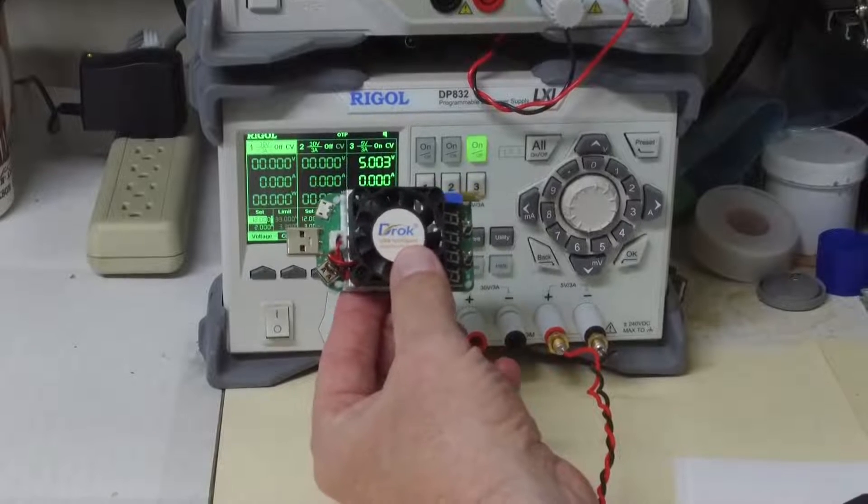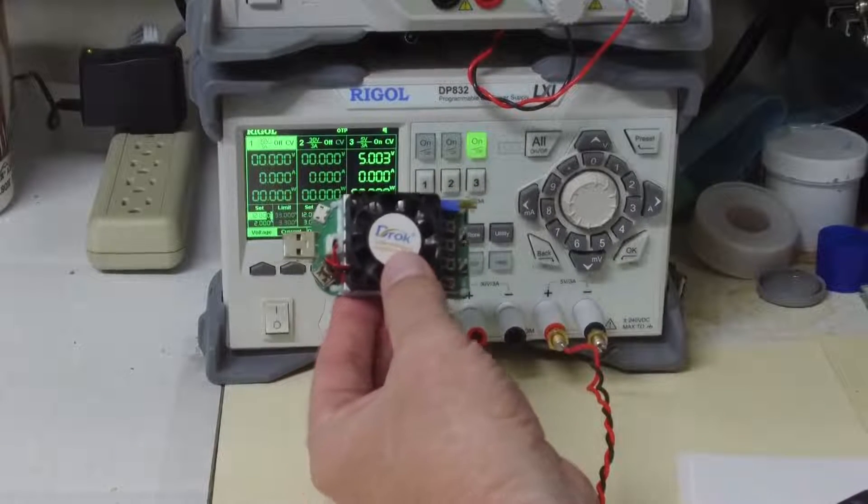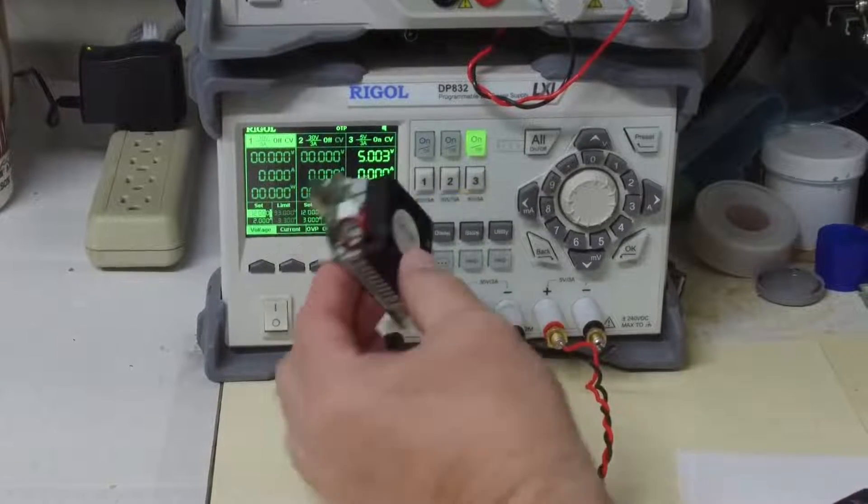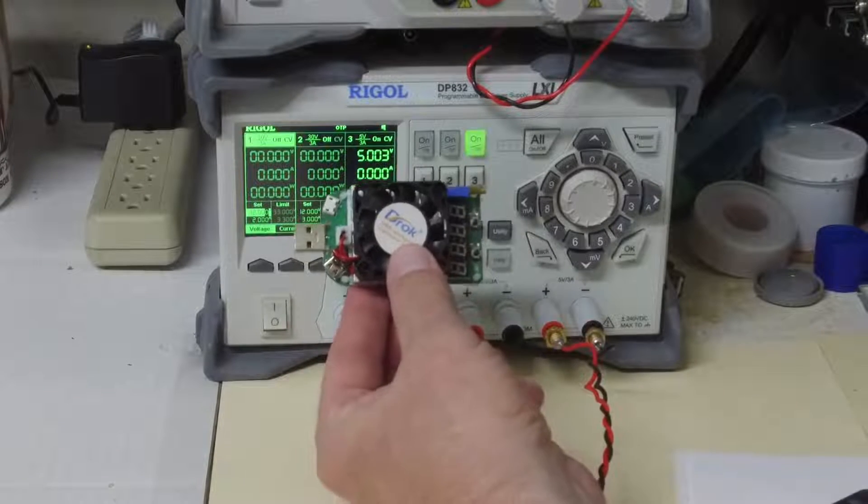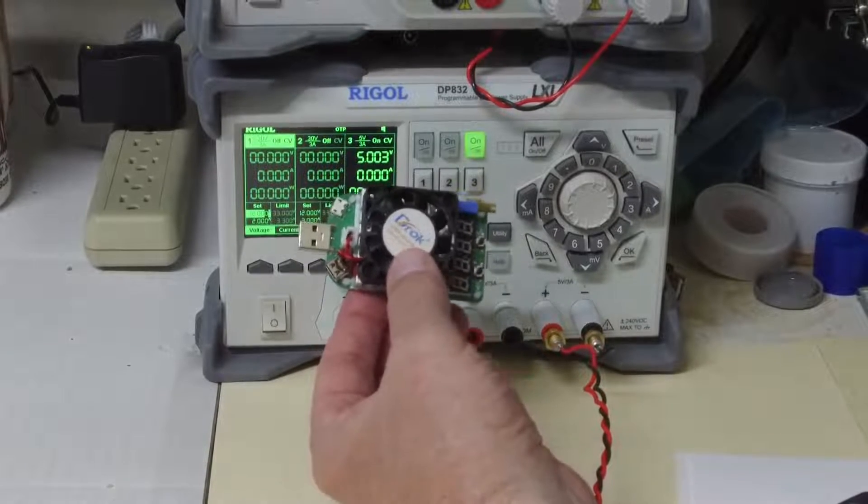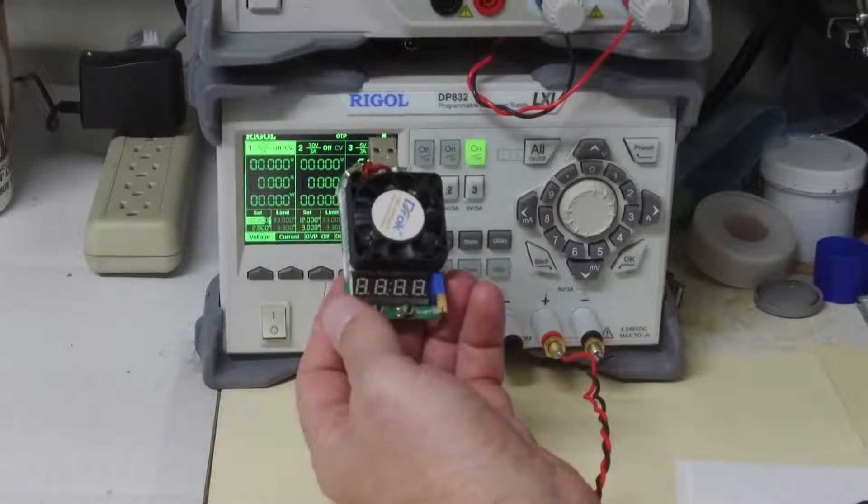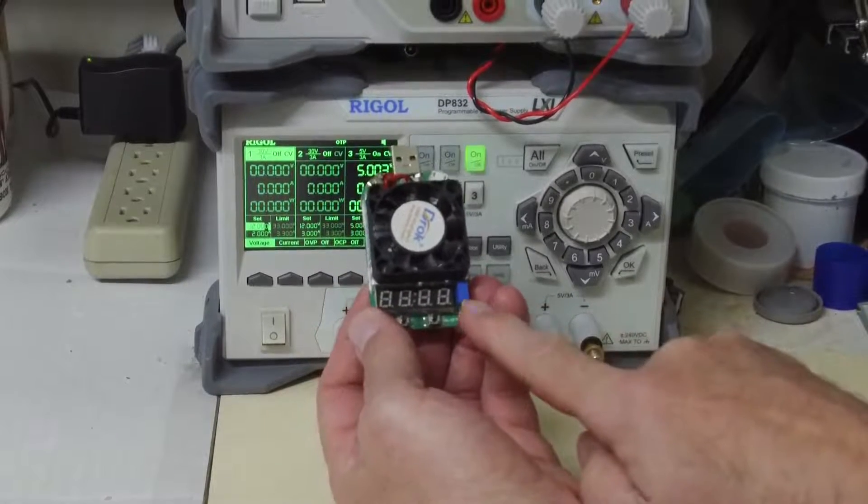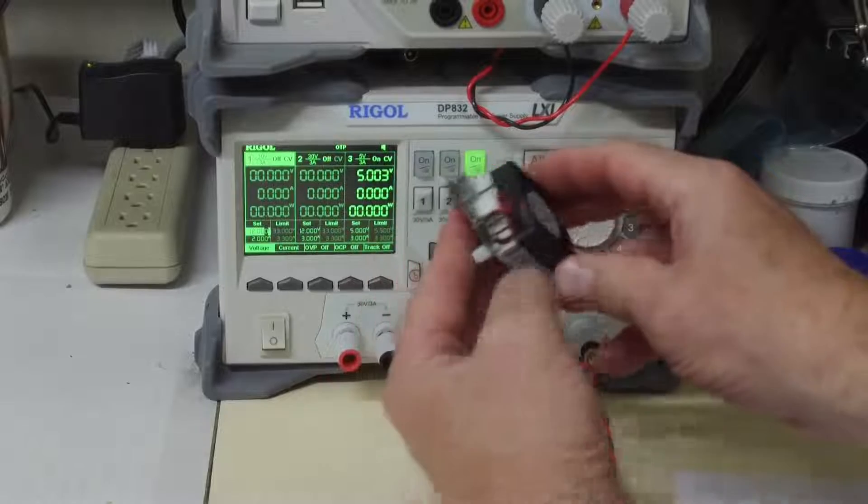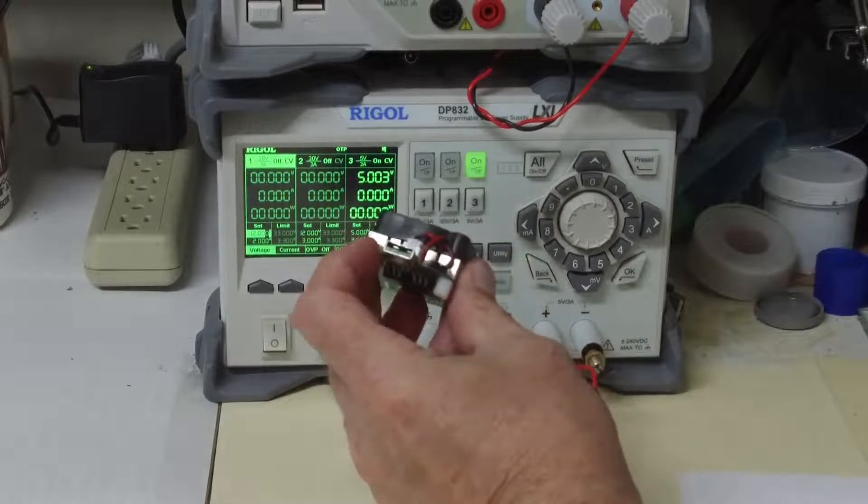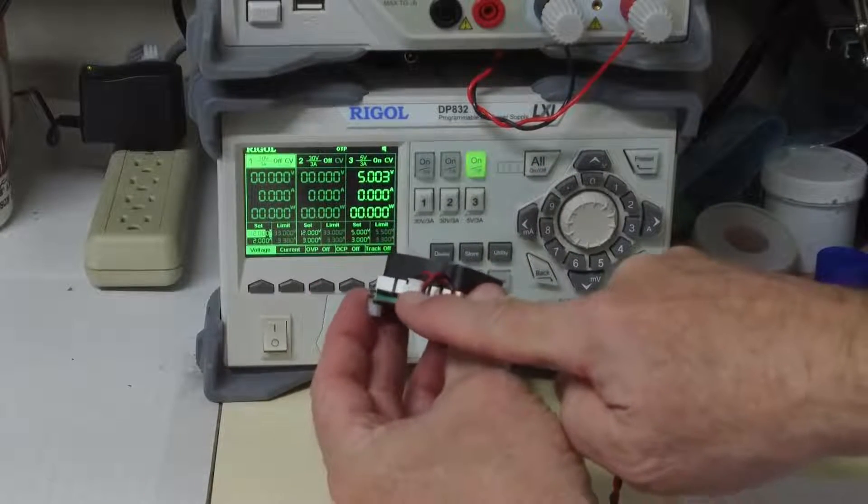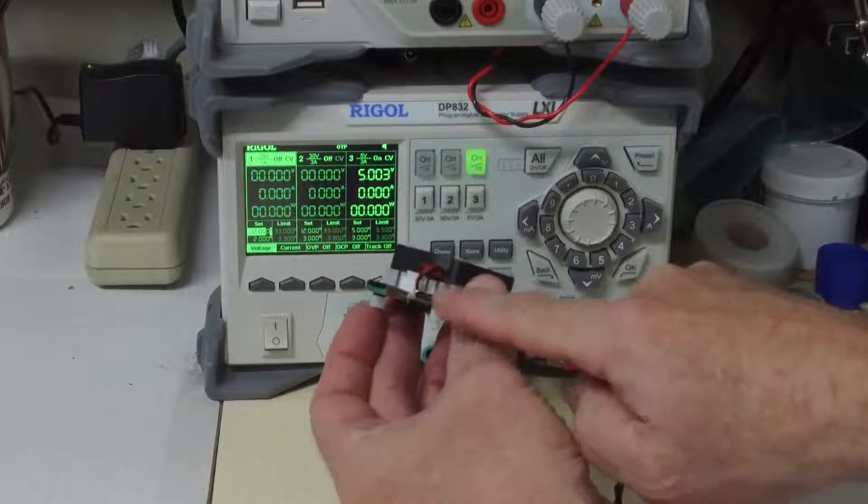This is a USB load tester made by DROK. This is a product I bought on Amazon for $13.99 and it allows you to enter in a current via this little potentiometer here. And it connects via micro USB or USB-A or USB-C.